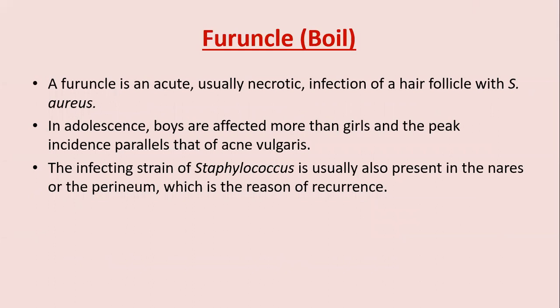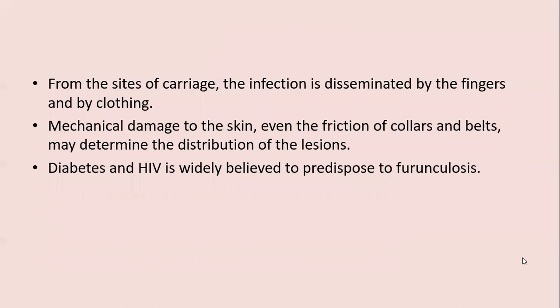A furuncle or boil is an acute, usually necrotic infection of the hair follicle with Staph. aureus. In adolescence, boys are affected more than girls, and peak incidence parallels that of acne vulgaris. The infecting strain of Staph. aureus is usually also present in the nares or perineum, which accounts for recurrence at those sites. From the site of carriage, infection is disseminated by fingers and clothing. Mechanical damage — even friction from collars and belts — may determine distribution of lesions.